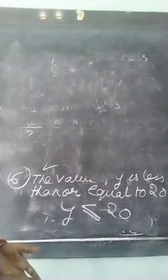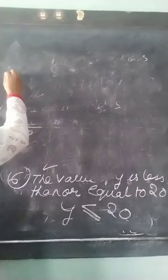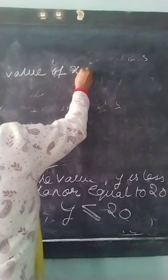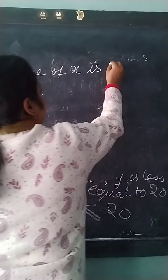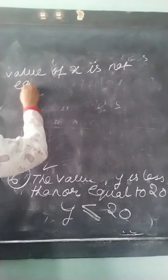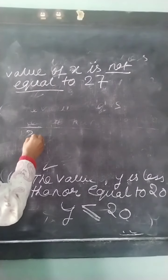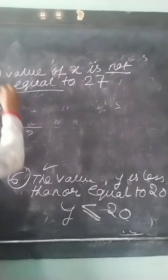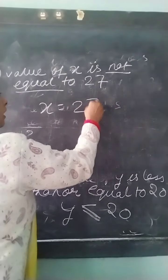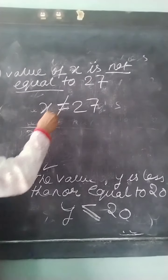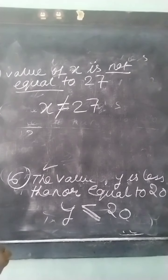Suppose it is given that the value of X is not equal to 27. If the value of X were equal to 27, we would write X equals 27. But since it is not equal to 27, we write the equal to sign and cut through it — the not equal to symbol. This means the value of X is not equal to 27.